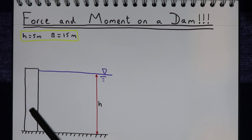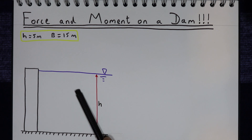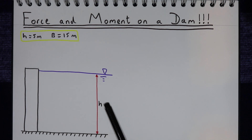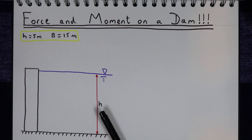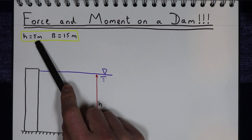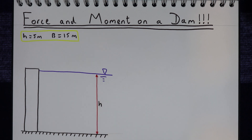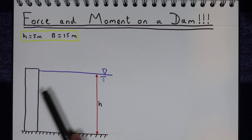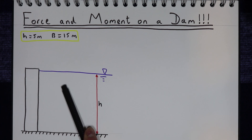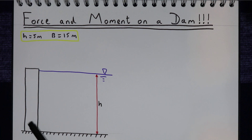In this video, we've got a dam that's retaining water to a certain height, h. In this example, the height of water is 5 metres and the width of the dam is 15 metres. What we're trying to work out is the total force pushing on the dam as a result of the water, and the moment at the base of the dam trying to topple it as a result of the force of the water.